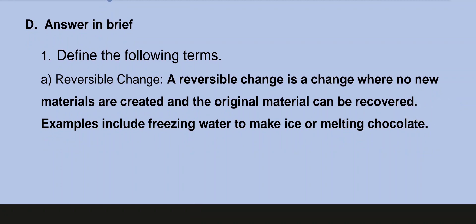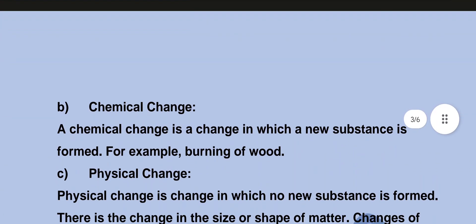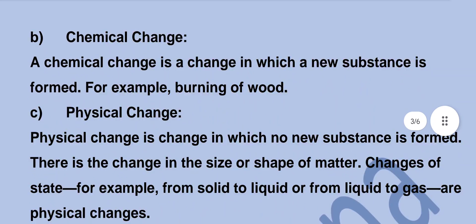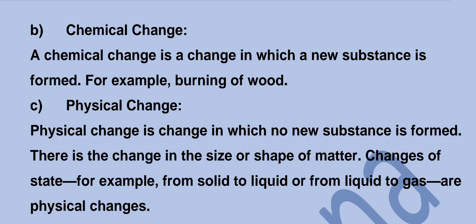Now answer in brief — define the following terms. Reversible change: a reversible change is a change where no new materials are created and the original materials can be recovered. Examples include freezing of water to make ice or melting of chocolate. Chemical change: a chemical change is a change in which a new substance is formed. For example, burning of wood.